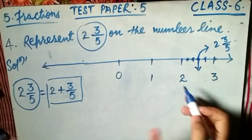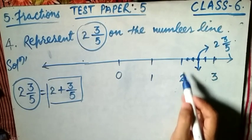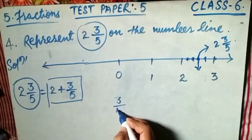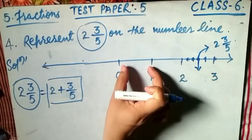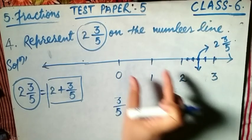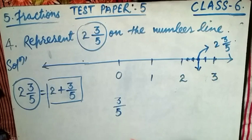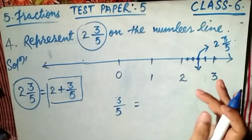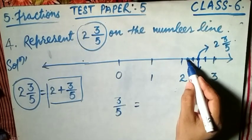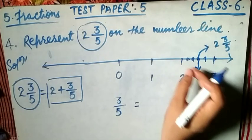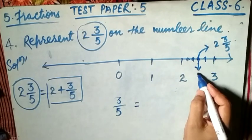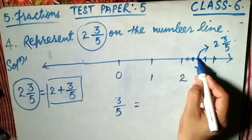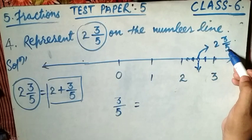So 2 is located here, but we need to mark 3/5 beyond it. 3/5 means each unit is divided into 5 equal parts. This is the first unit, second unit, third unit — each unit divided into 5 equal parts. So the parts are 1/5, 2/5, 3/5, 4/5, and 5/5. The point 3/5 past 2 indicates 2 and 3/5.